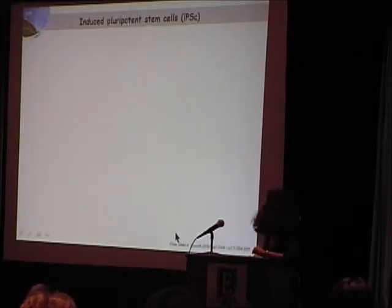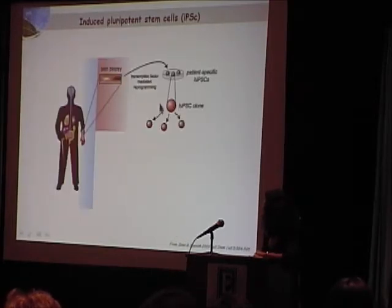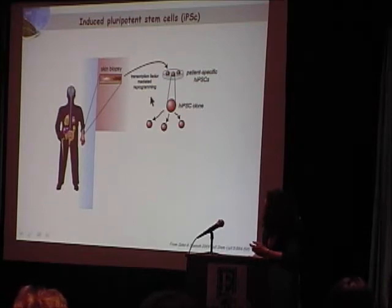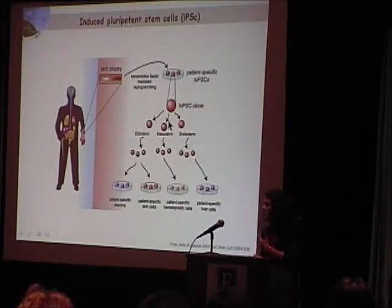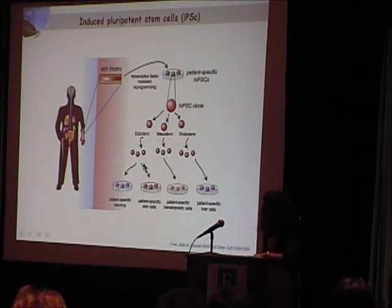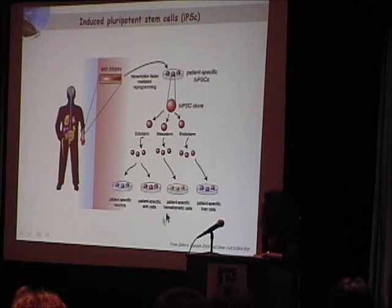In particular, IPS — the induced pluripotent stem cells, as Michael Young said, can be generated from skin cells. What we do is we treat them in different ways. We generate stem cells, which then have the potential, in theory, to become all the different cells of the body. So they can become neurons, they can become skin cells again, they can become blood cells, liver cells — and we want to make them retinal cells.